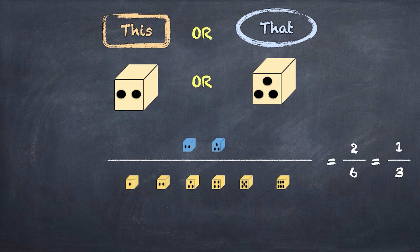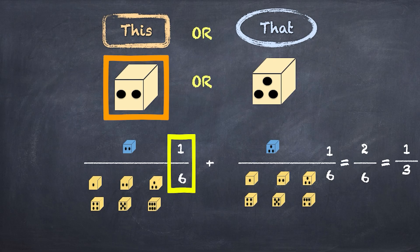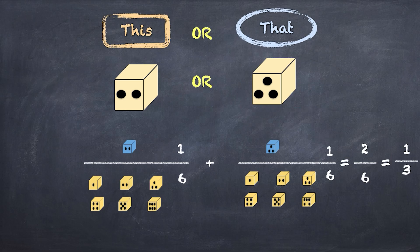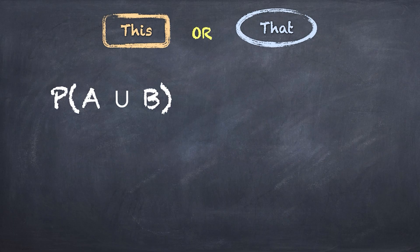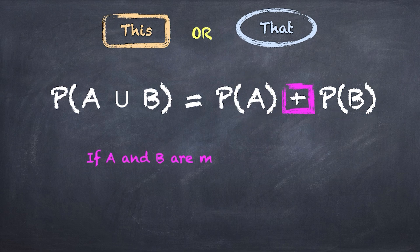Is there an easier way of getting there without counting up all the possible outcomes? Yes — we can think about the probability of each outcome and add them together. The chances of rolling a two is one over six, and the chances of rolling a three is one over six. If we add them together, we get two over six, which is one over three. The lesson here is that the probability of A or B taking place is the same as adding the probability of A and B, but for this to be true, the events have to be mutually exclusive — with one throw of the dice, you can't get a two and a three.